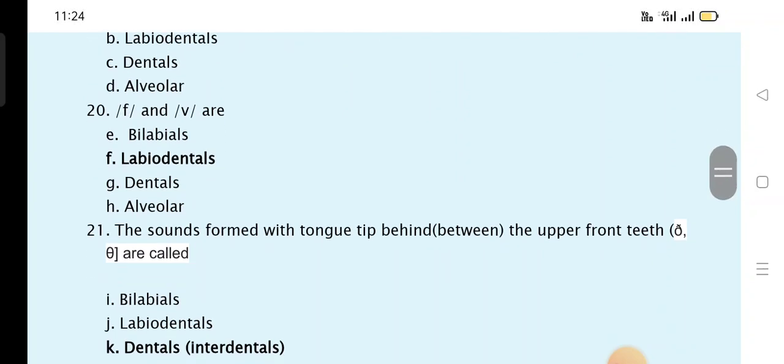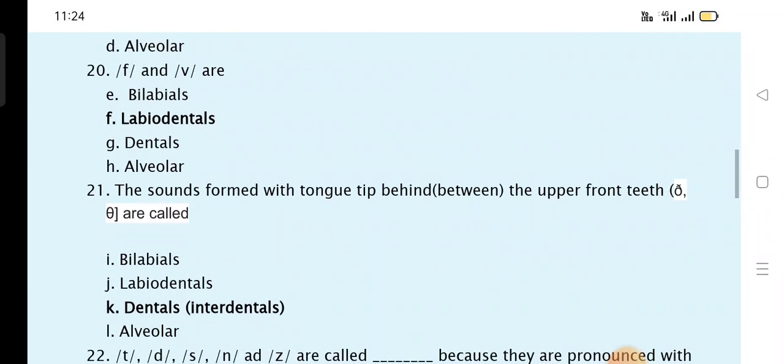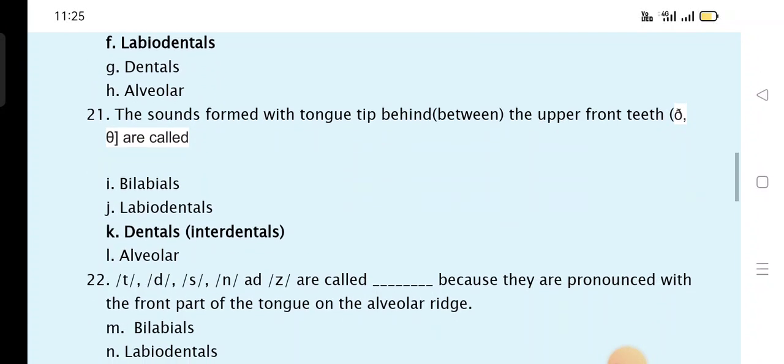F and V are labiodentals. The sounds from the tongue tip behind between the upper front teeth, theta and delta, are called dental and interdentals.